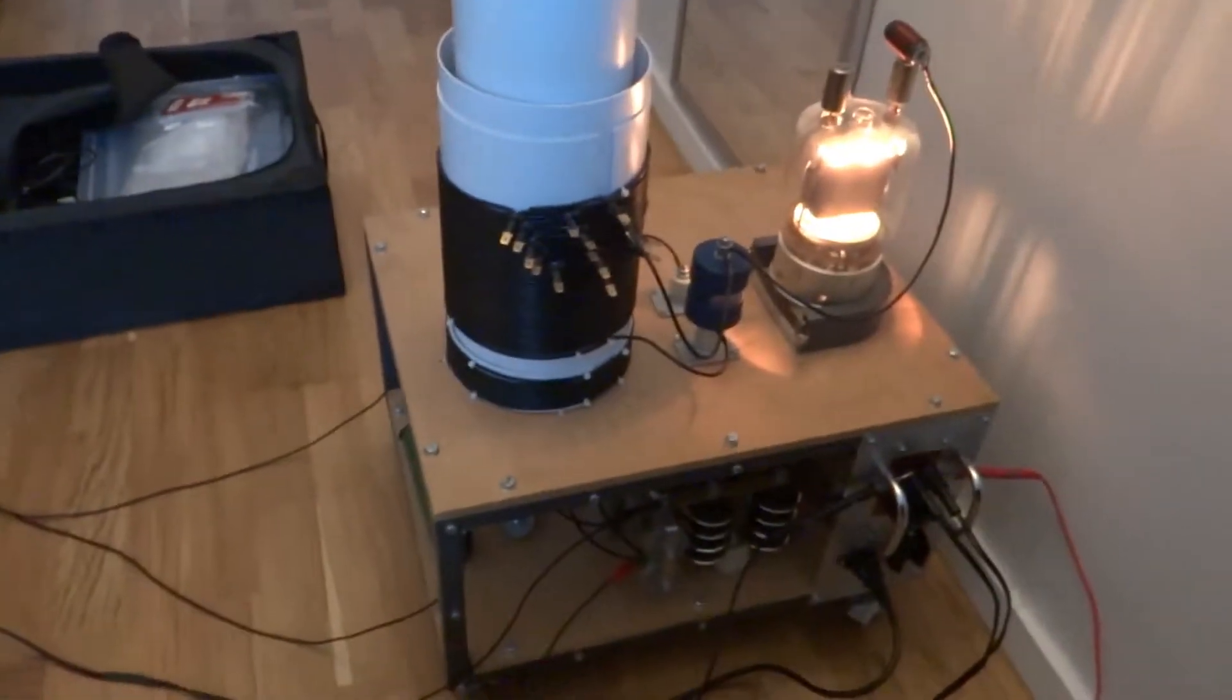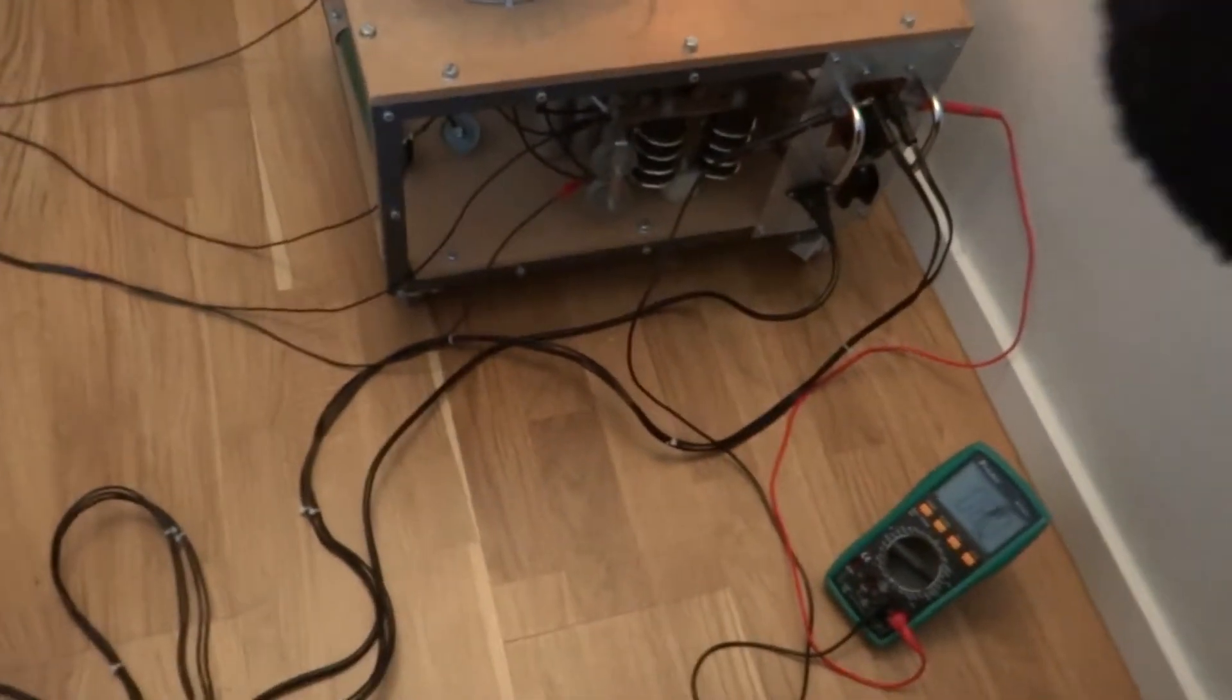Hi and welcome to the third part of the vacuum tube Tesla coil build. Today I'll be troubleshooting this thing, hence why you see so many wires running around on the floor and my oscilloscope over there.